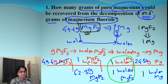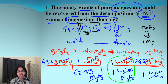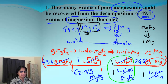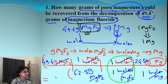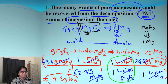Now we cancel the common units across the grid. Multiply all numerators and divide by all denominators, and the final answer is 19.3 grams of magnesium.